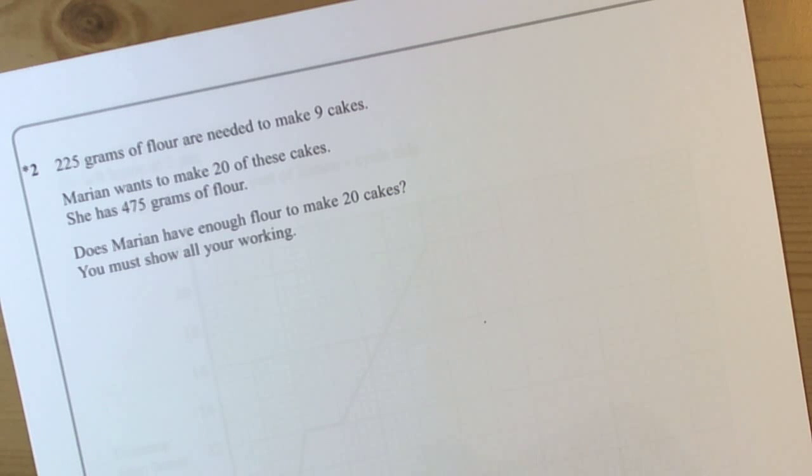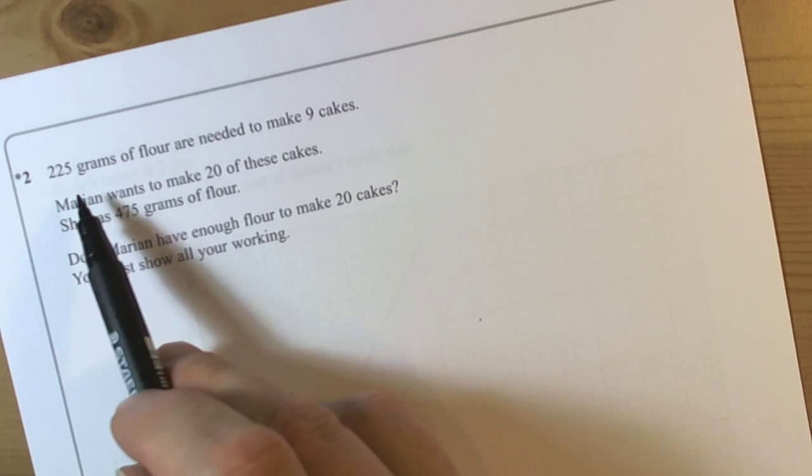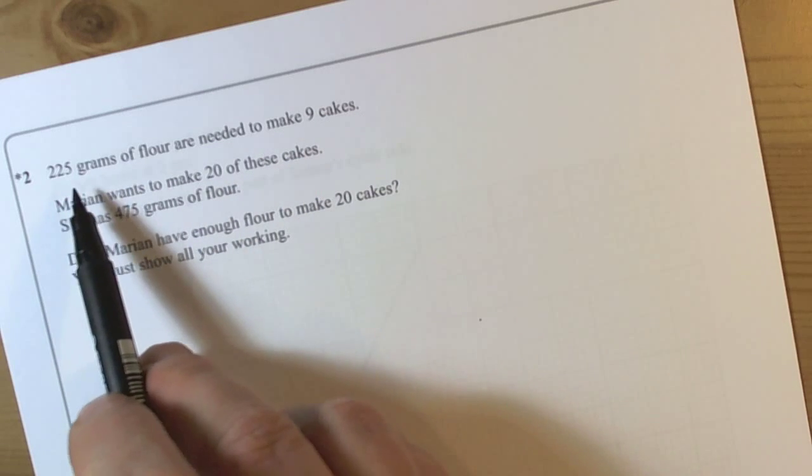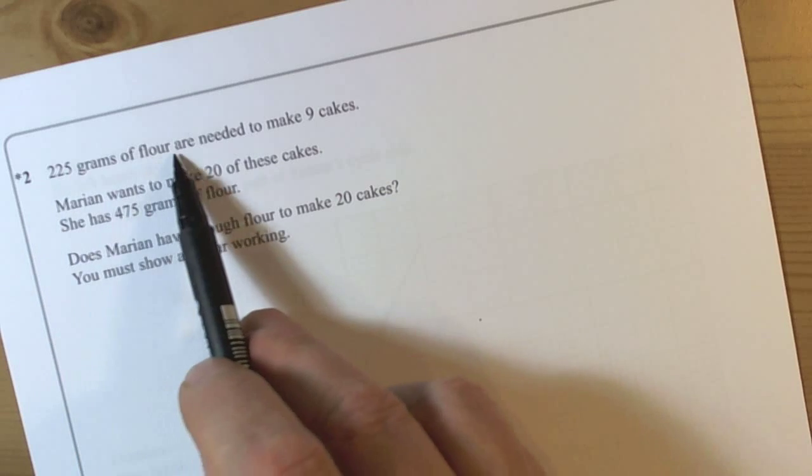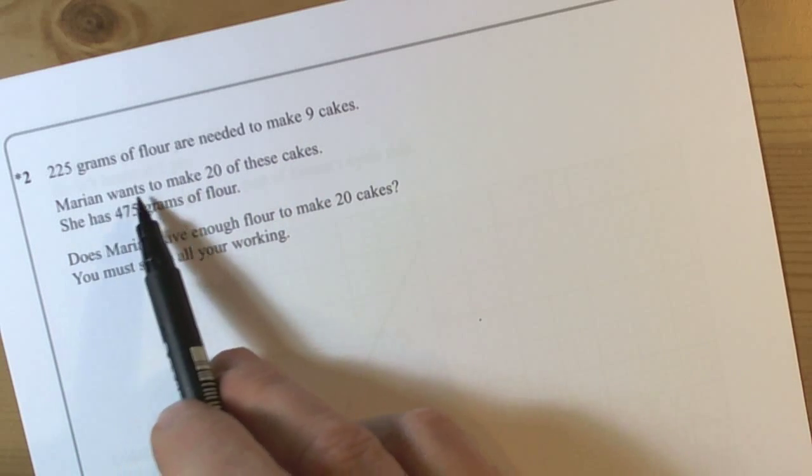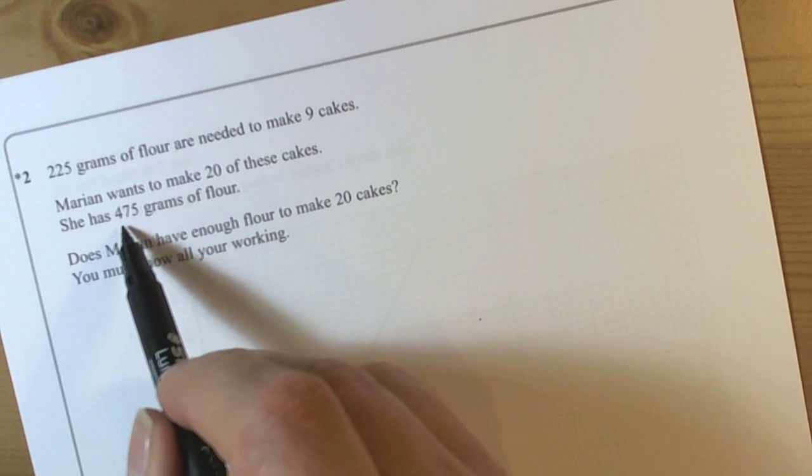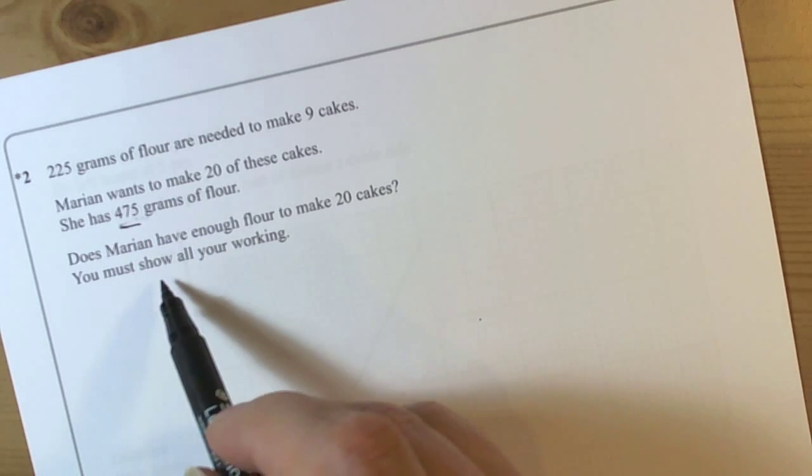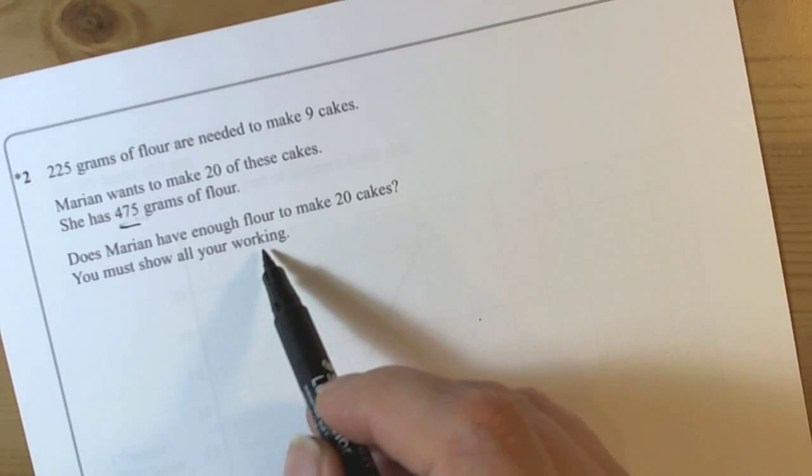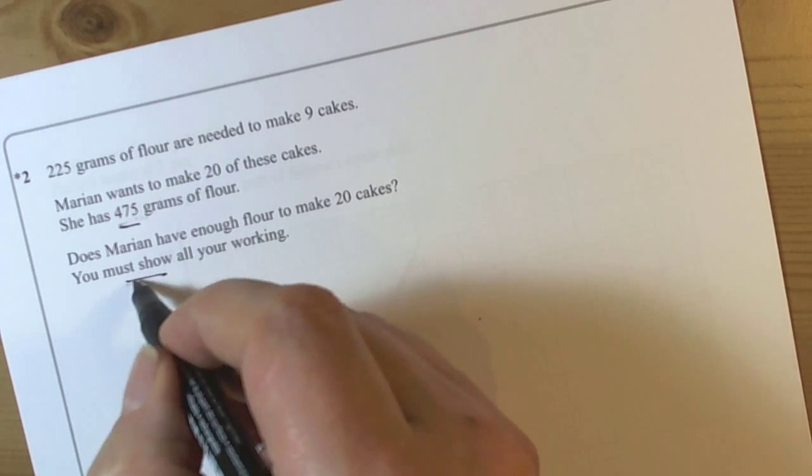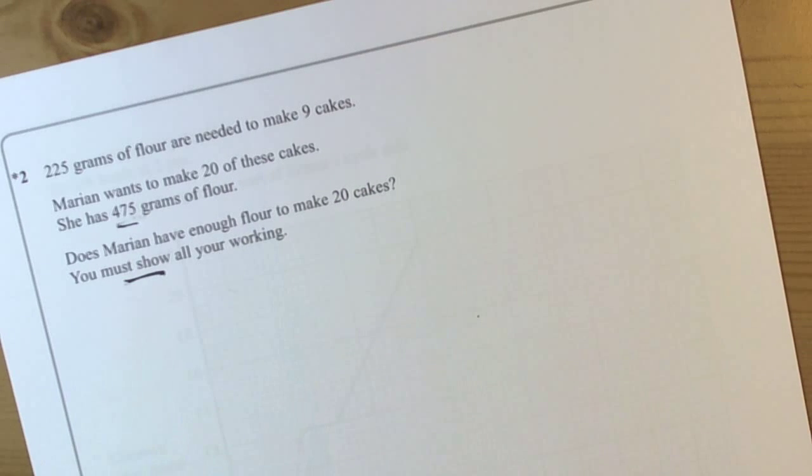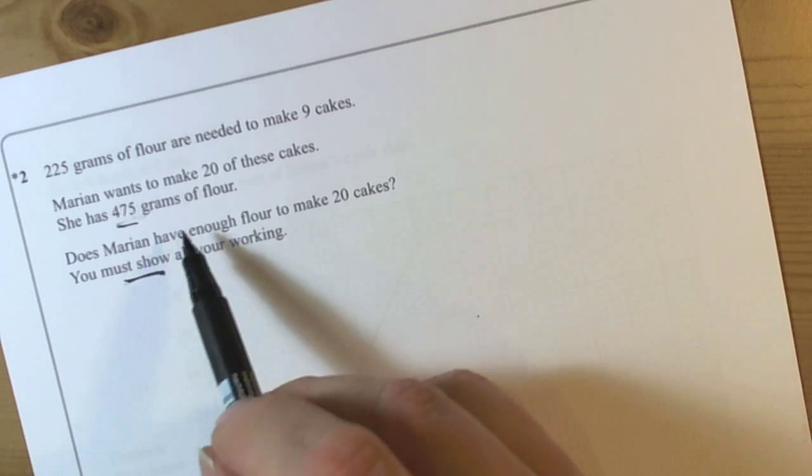Okay, so here we've got a question that's asking us to work with part of a recipe. It's a kind of ratio proportion question. It gives us some information: 225 grams of flour are needed to make 9 cakes. Marian wants to make 20, and she has 475 grams. The question is asking, does she have enough flour to make 20 cakes? You must show all your working. It's a starred question, so really important to remember that with starred questions we should be going through really logically, writing out the answers in clear steps.